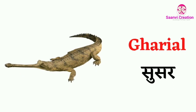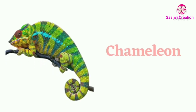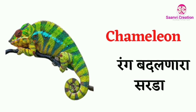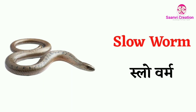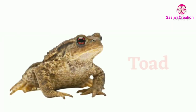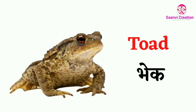Gharial (G-H-A-R-I-A-L) — gharial means 'Susar'. Chameleon (C-H-A-M-E-L-E-O-N) — chameleon means 'Ranga Badal Nara Sarada'. Slowworm (S-L-O-W-W-O-R-M) — slowworm means 'Slowworm'. Toad (T-O-A-D) — toad means 'Bhek'.